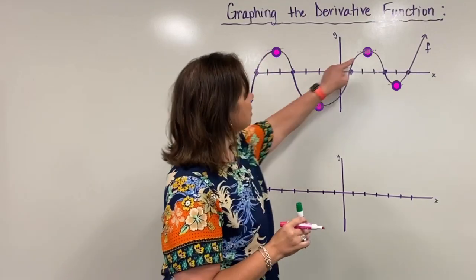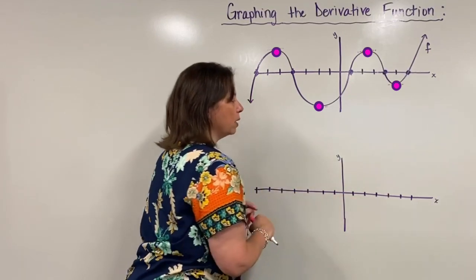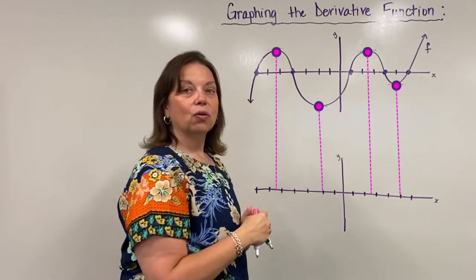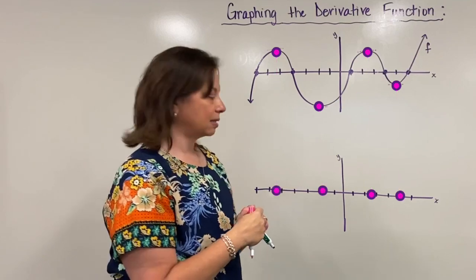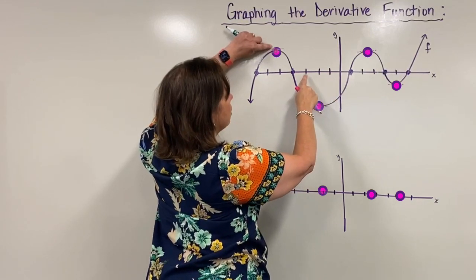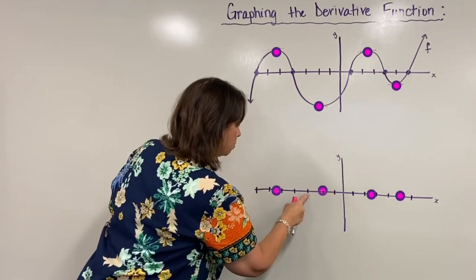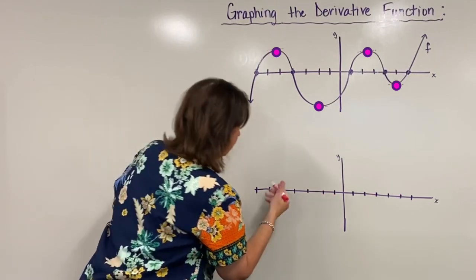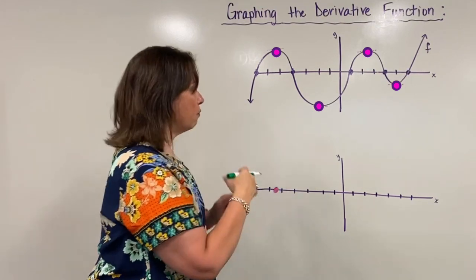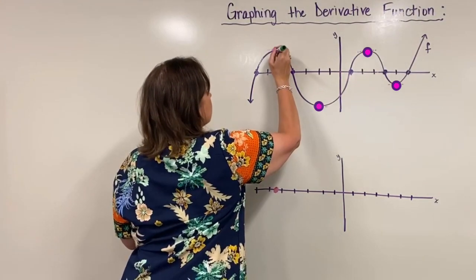When I notice this in the original function, what that actually means in terms of the derivative graph is those are the places where the derivative graph is crossing the x-axis. So right here I seem to have a horizontal tangent at about negative five and a half, so I'm expecting to have a point for my derivative graph that actually crosses the x-axis. Let's just connect those pieces.